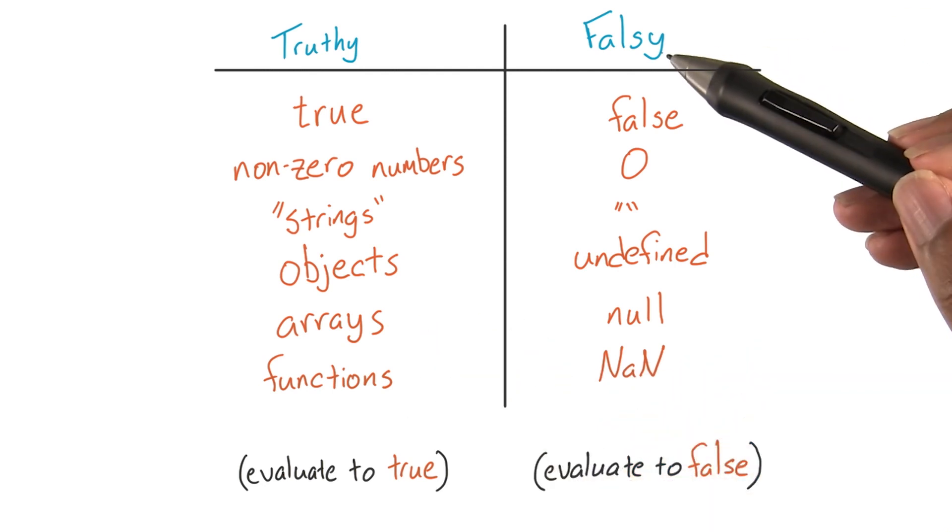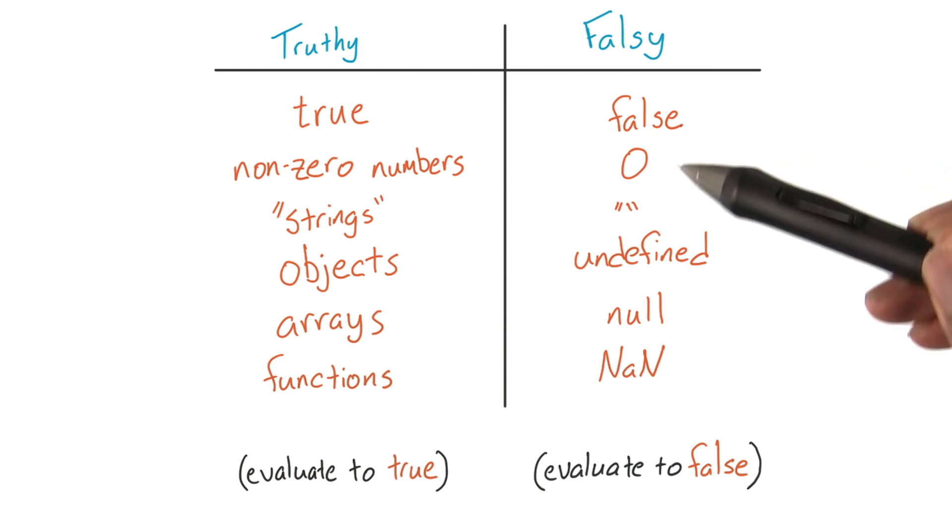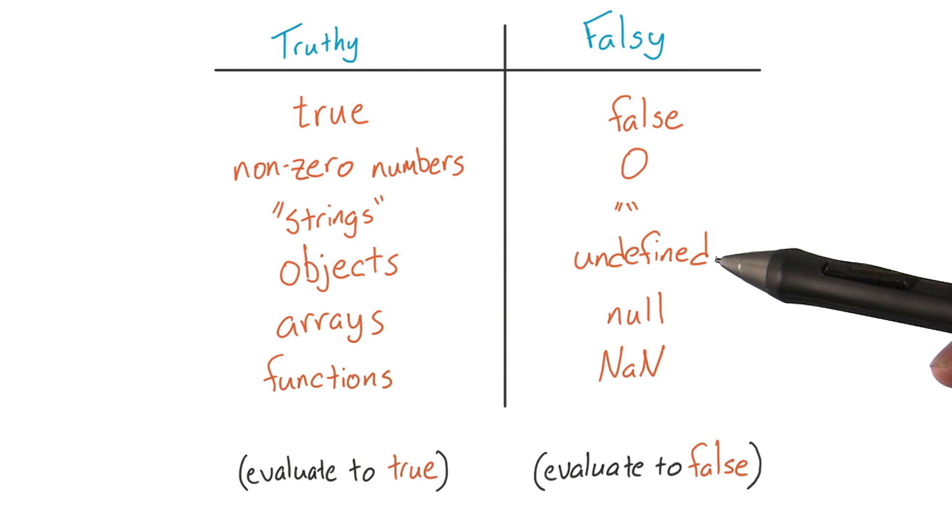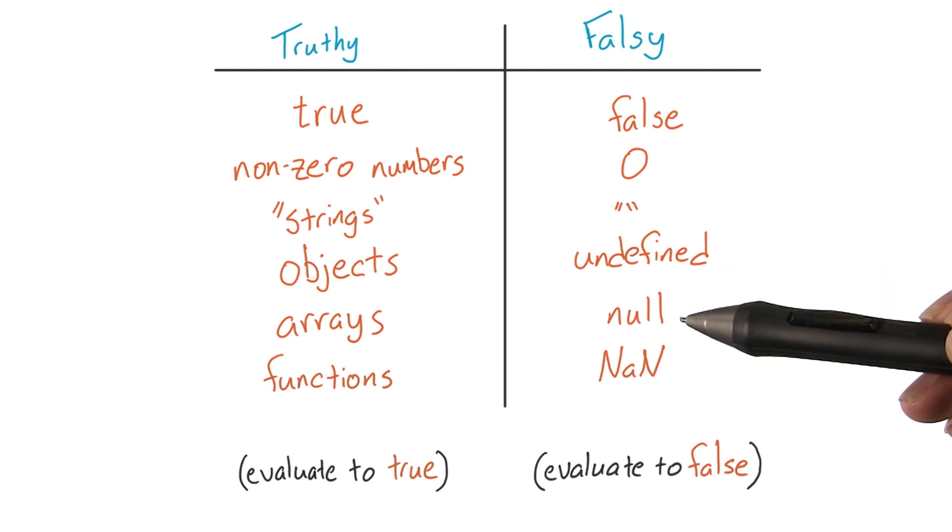And under falsy, we've got false, zero, empty strings, undefined, null, and not a number.